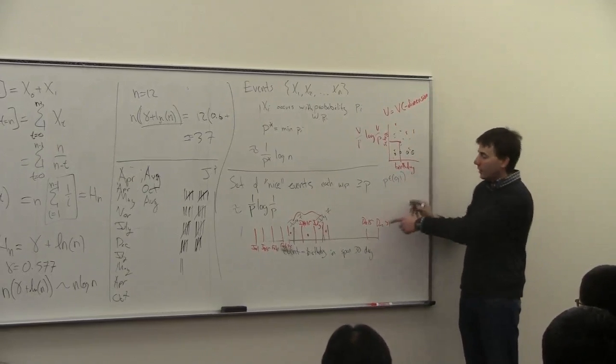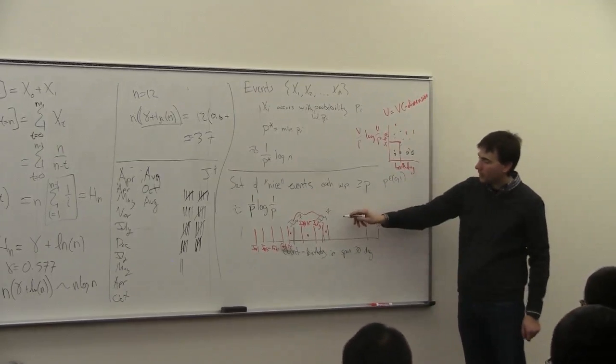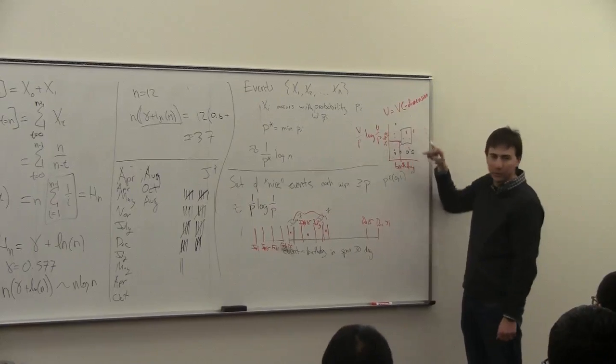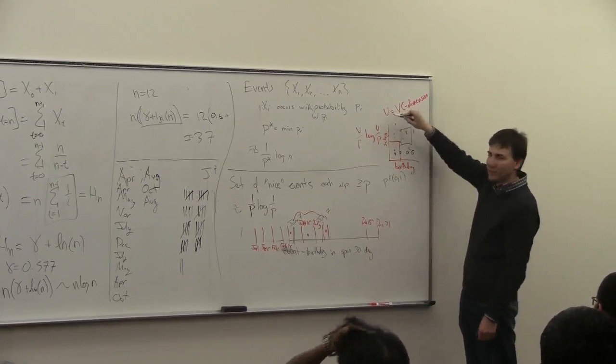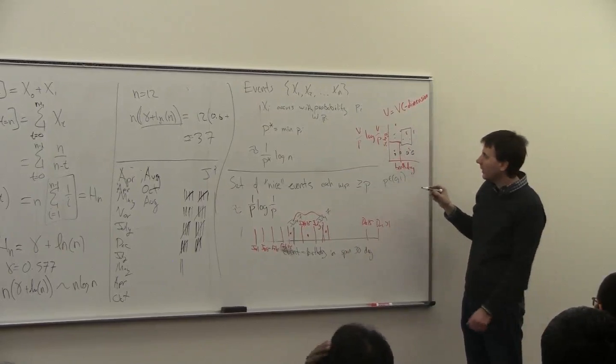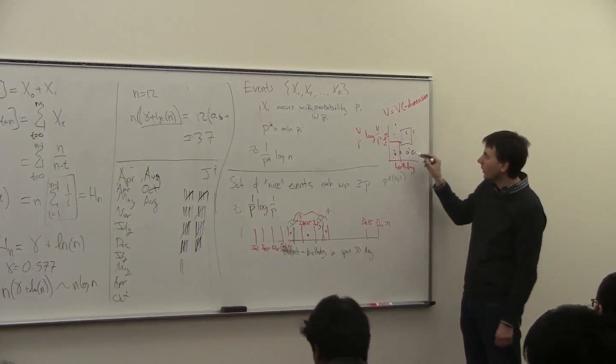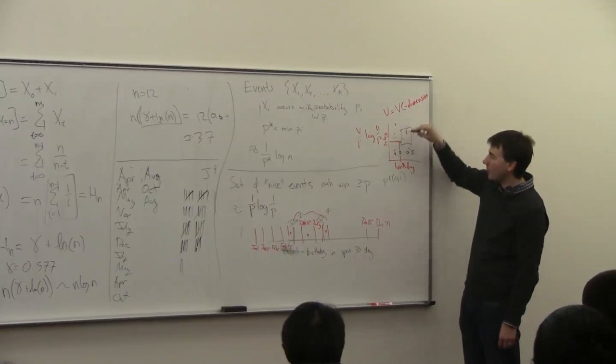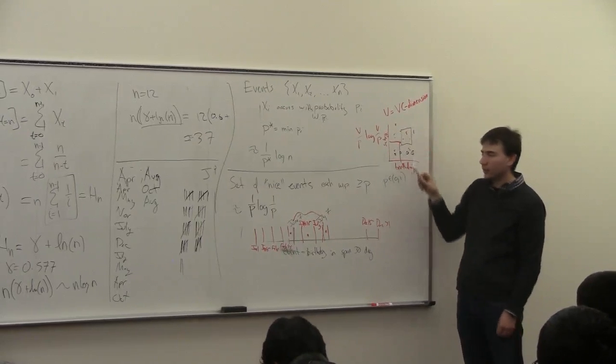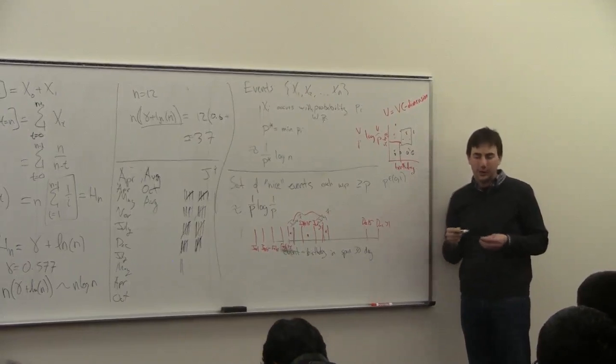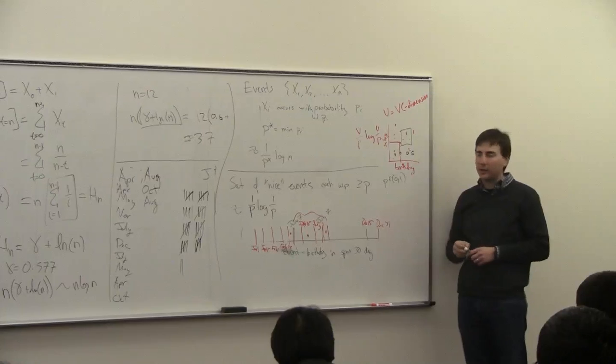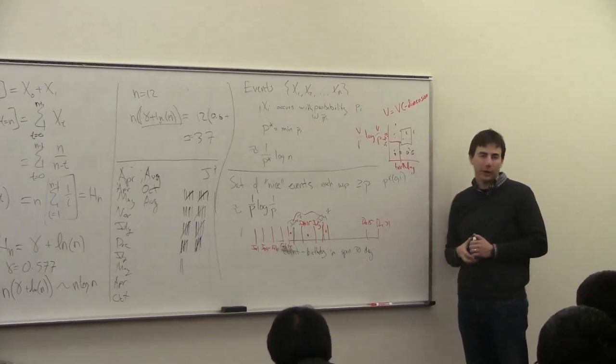But I can have some event that looks like a rectangle. Right? A rectangle is described on these four different sides, and the VC dimension will be four. And so then if I do a random sample of everyone on the internet, then, you know, the rectangles count as these nice events. Any rectangle which has at least a P probability of having someone. I can hit each of the customers this way.